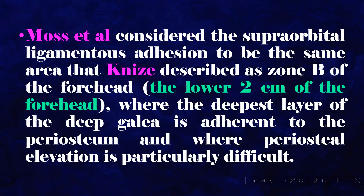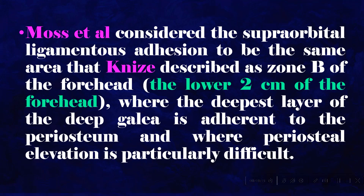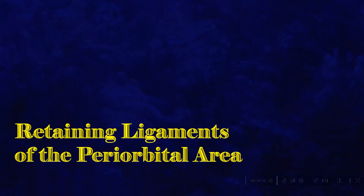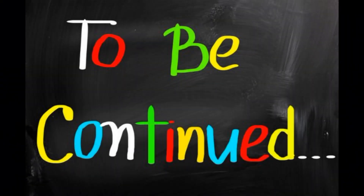Moss et al. considered the supraorbital ligamentous adhesion to be the same area that Knies described as zone B of the forehead — the lower 2 cm of the forehead — where the deepest layer of the deep galea is adherent to the periosteum and where periosteal elevation is particularly difficult. This concludes the overview of the retaining ligaments of the periorbital area and forehead.